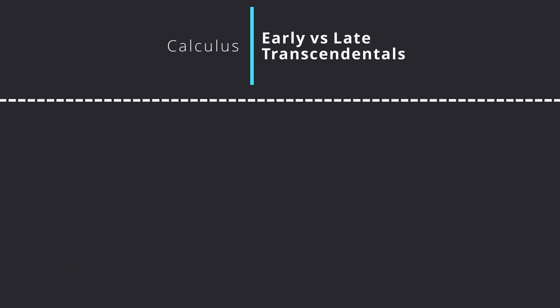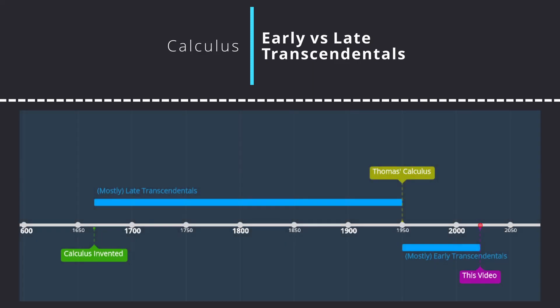To provide some historical context, late transcendentals was the standard way of teaching calculus dating back to the 17th century, but early transcendentals is fairly recent, only going back a couple of decades. Although the styling indicates the only differences are transcendental functions, there exist significant differences in terms of explanation and syllabus order, even though both typically cover the same topics.